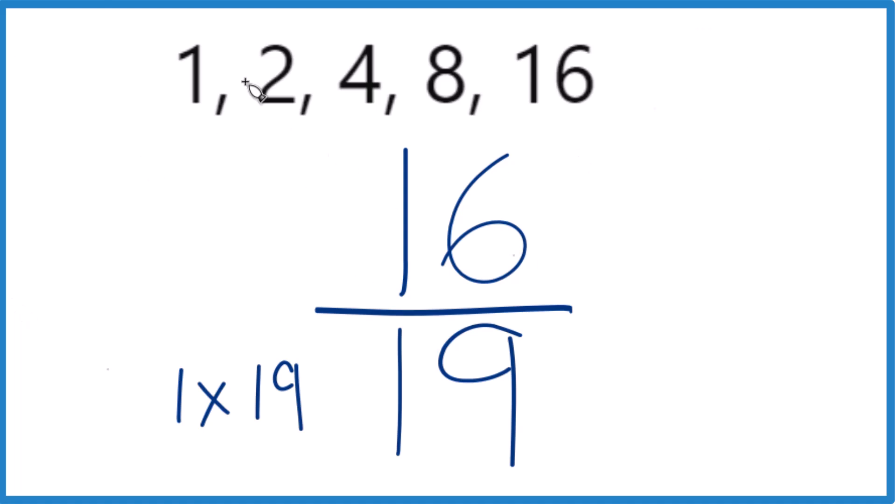So if we look for a common factor, the only thing we have in common for 16 and 19 is 1. That's our greatest common factor.